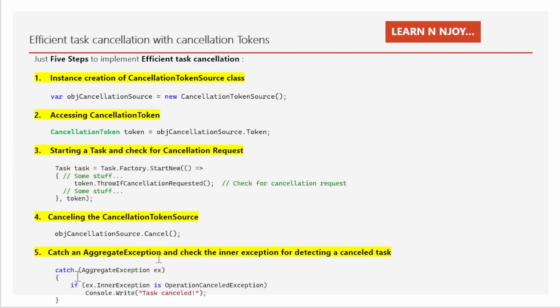We catch the AggregateException ex, then check if ex.InnerException is an OperationCanceledException to determine if the task was cancelled. That's why I have written: catch (AggregateException ex) — if ex.InnerException is OperationCanceledException, I print "Task Cancelled" to the console window. All five steps ensure that tasks can be safely cancelled and provide a mechanism to handle cancellation gracefully. Let's switch to Visual Studio and see all these things in action.